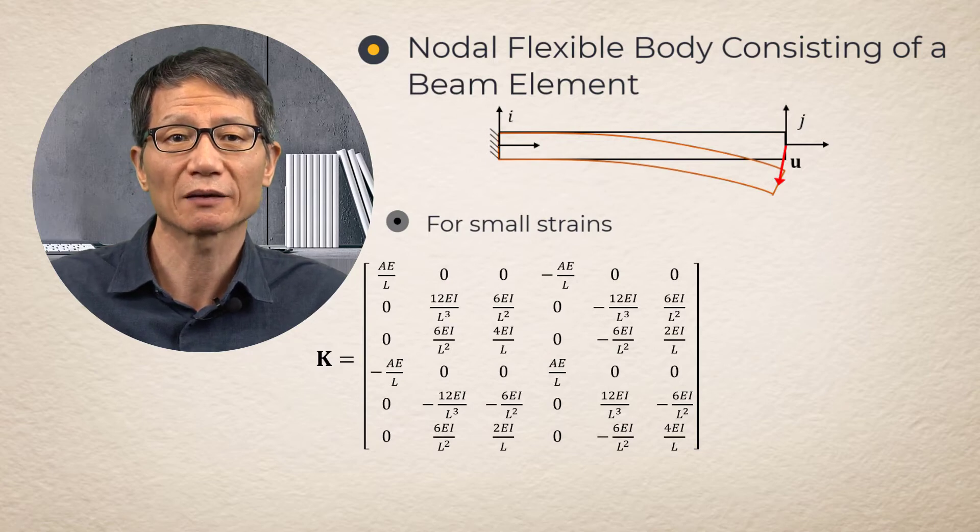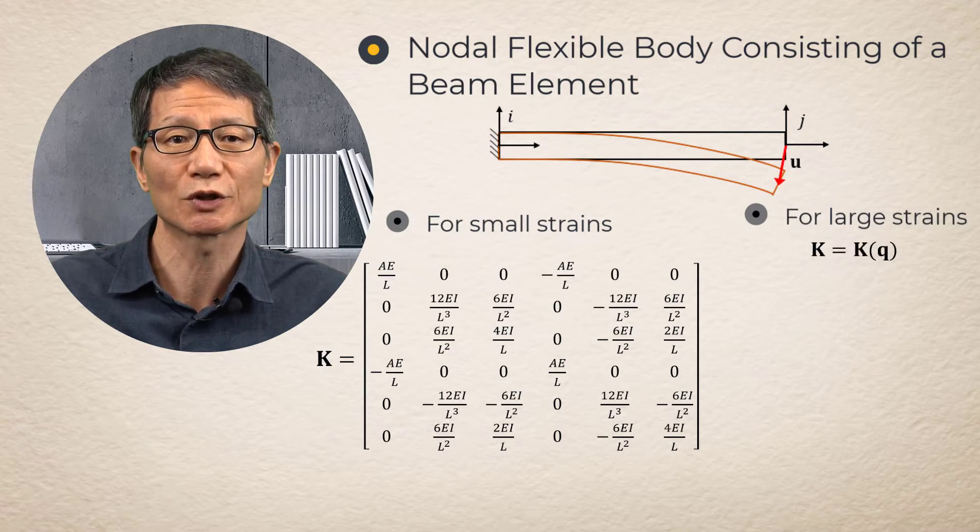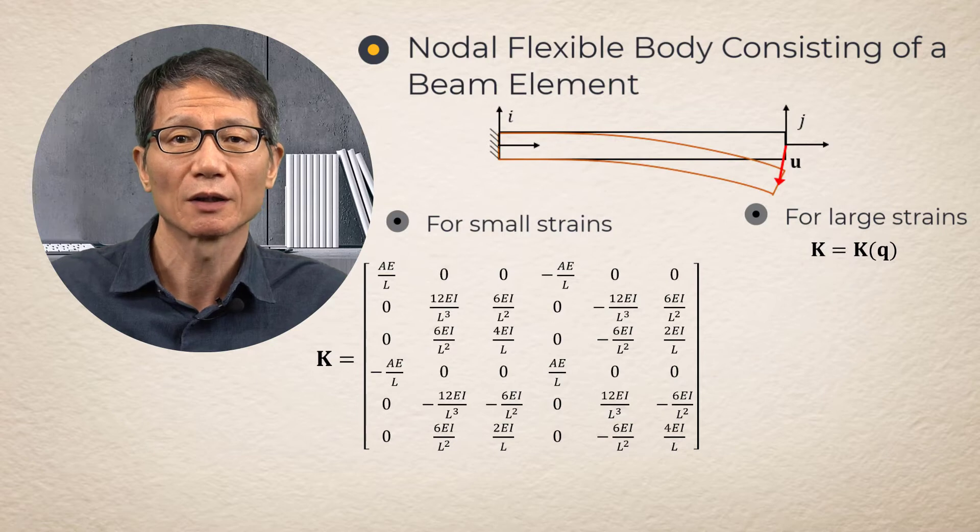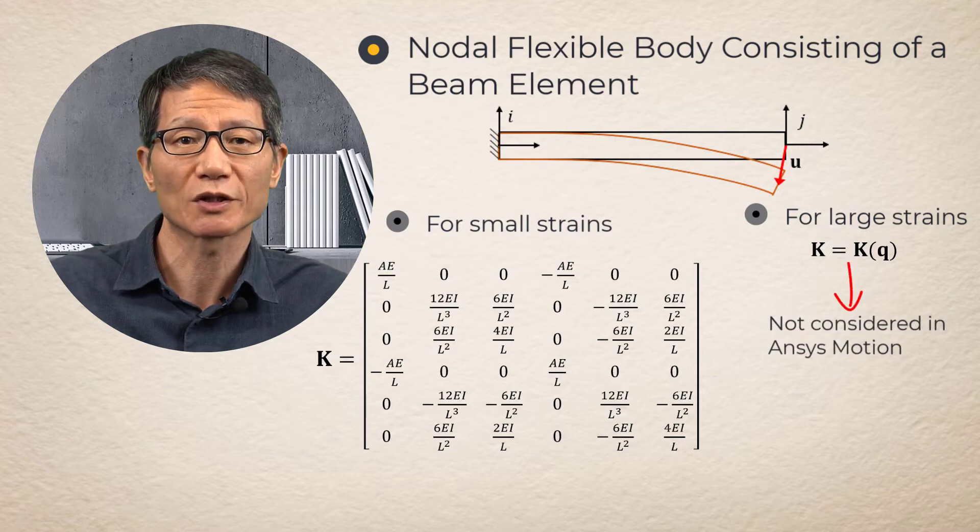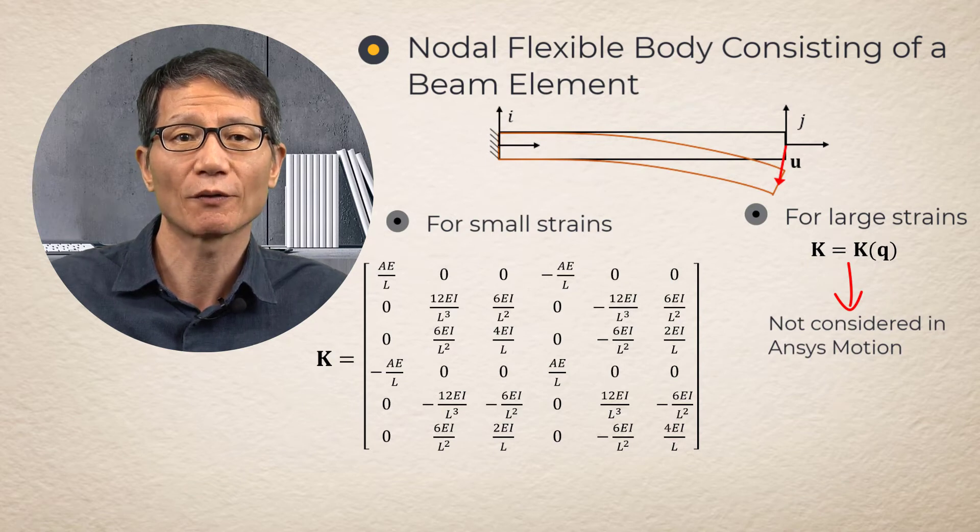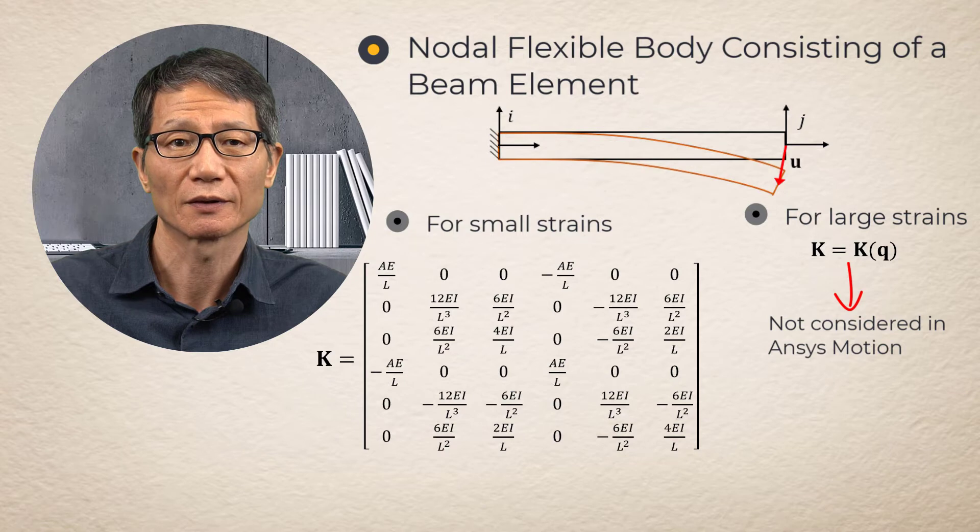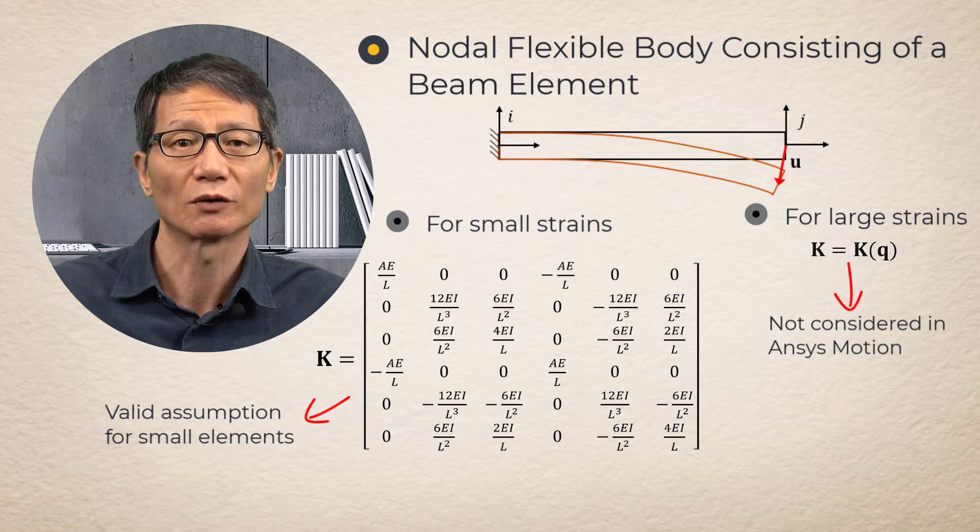If the beam element undergoes a large deformation, the stiffness matrix may be a function of a new deformed position. However, we will assume that the deformation is always small so that the stiffness matrix is constant before and after deformation. This assumption can always be satisfied if we maintain the element size to be small.